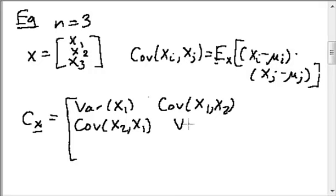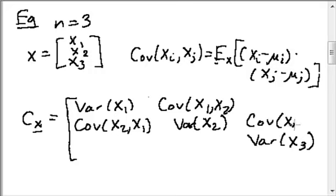In the 2,2 element, again, I've got the covariance of x2 and x2, which is the variance of x2. And in fact, everywhere along the diagonal, I'm going to have a variance. And everywhere on the off-diagonal, I'm going to have a covariance. So this is going to be x2, x3, and the covariance of x1, x3, and so on.